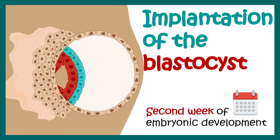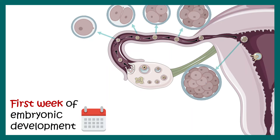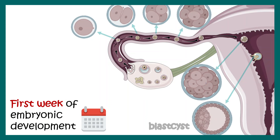Before jumping into details, let us recap what happened in the first week of embryonic development. Everything started with the fertilization event, which leads to the production of the zygote. The zygote divides and forms the 2-cell stage, 4-cell stage, 8-cell stage, and eventually becomes the morula, which has a mulberry-like appearance and has approximately 16 blastomeres. Eventually, the morula gives rise to the blastocyst, around 6-7 days post-fertilization.